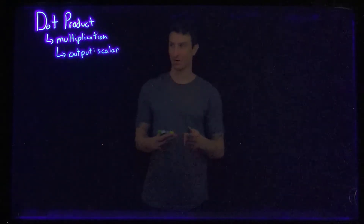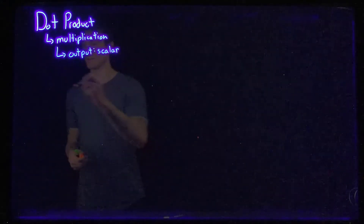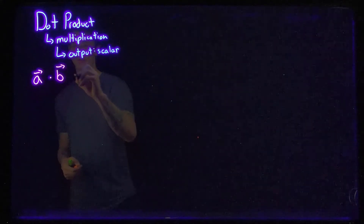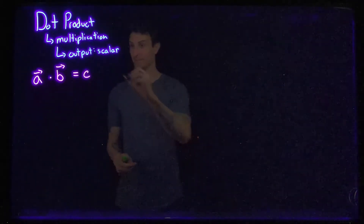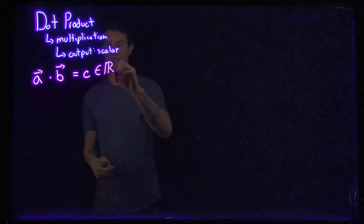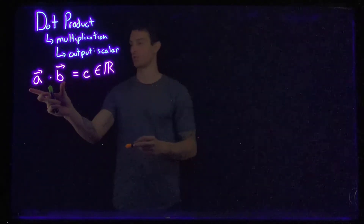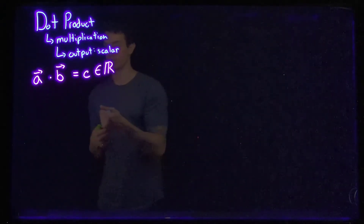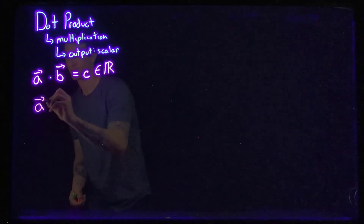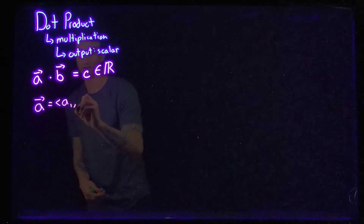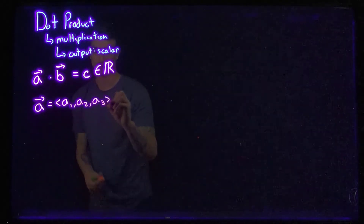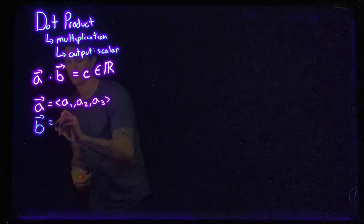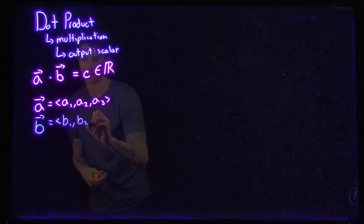So an actual number. Imagine we took two vectors, let's call them a and b, and we dot them together. What I'm saying is we will get some scalar C that is living inside the real numbers — some number that is a real number. We're taking two vectors and instead of getting a vector out, we're going to get a scalar. So how do we perform the operation? Let's make these arbitrary vectors: a is composed of a1, a2, a3, and b is b1, b2, b3.